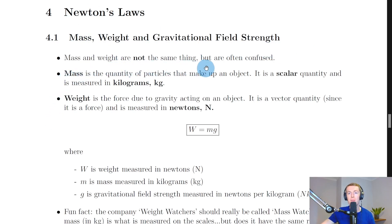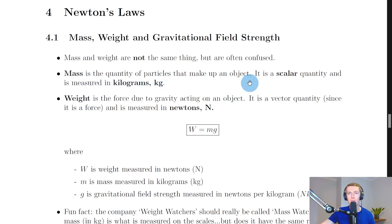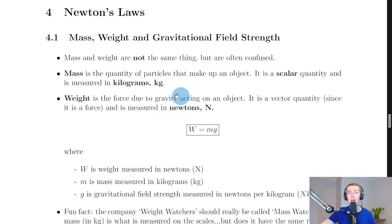The first thing you need to realize is that mass and weight are not the same thing, but are often confused in everyday life. Mass is the quantity of particles that make up an object — i.e., how much matter makes up an object. It is a scalar quantity, measured in kilograms (kg). A scalar quantity is one that just has a magnitude or size only, with no direction.